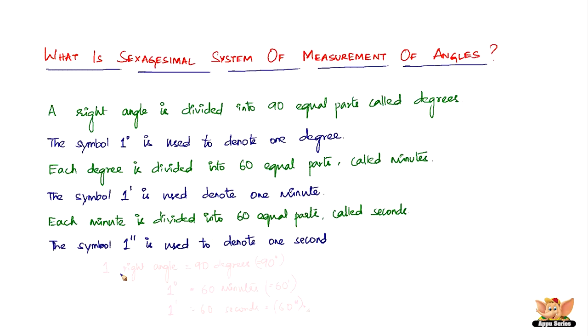So in short, one right angle equals 90 degrees, one degree equals 60 minutes, and one minute equals 60 seconds.